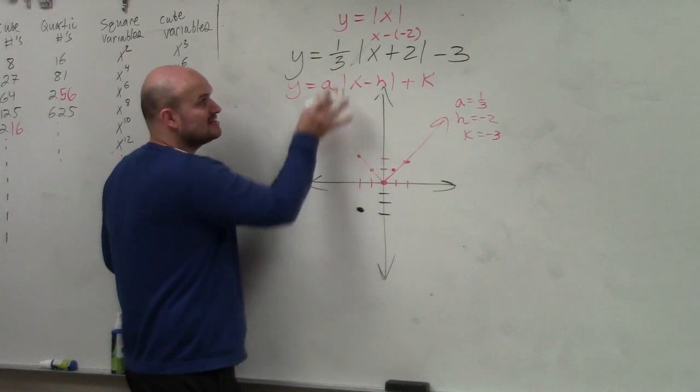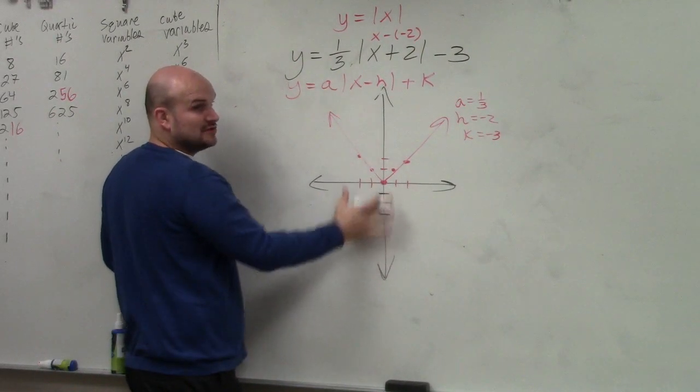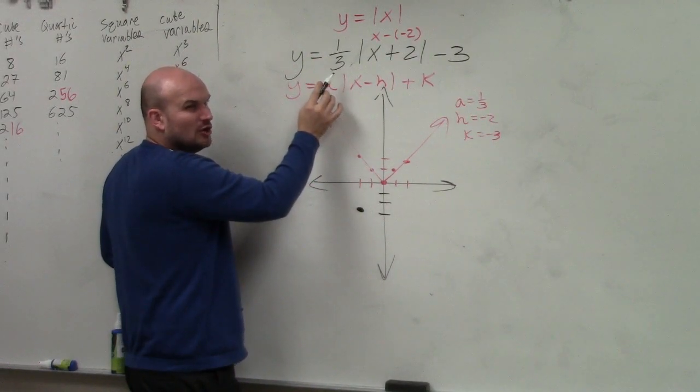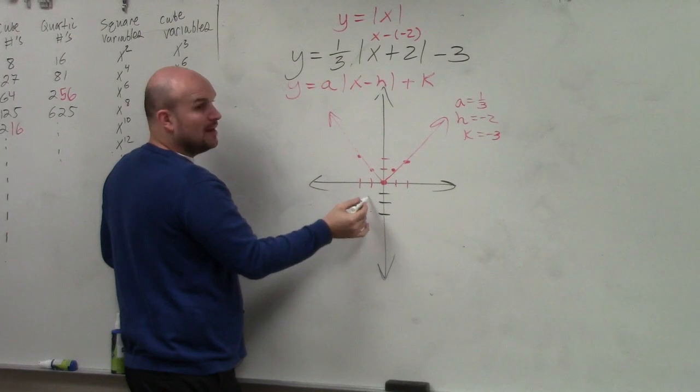Then the other difference is this 1/3. It's positive, so the graph opens up. However, we think of this as our slope. Instead of going over 1, up 1, we go over 1, up 1/3.